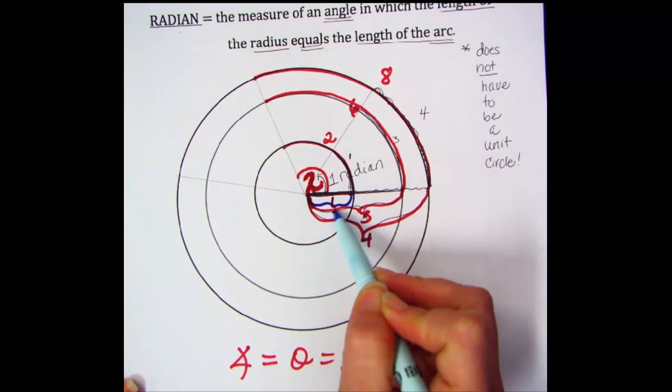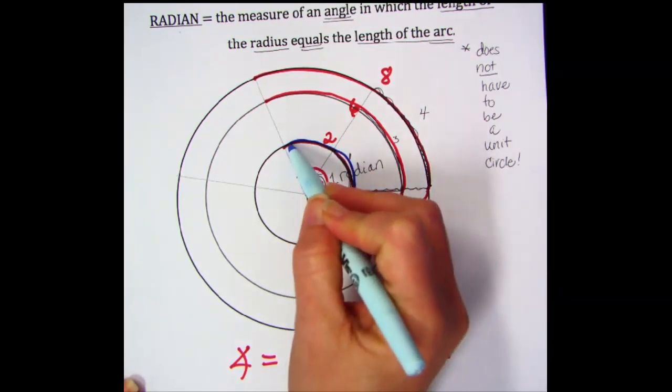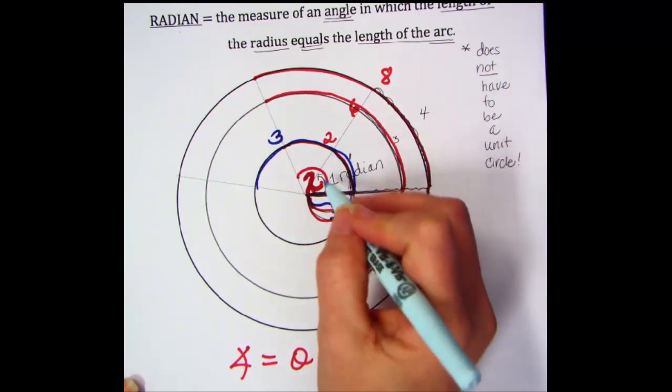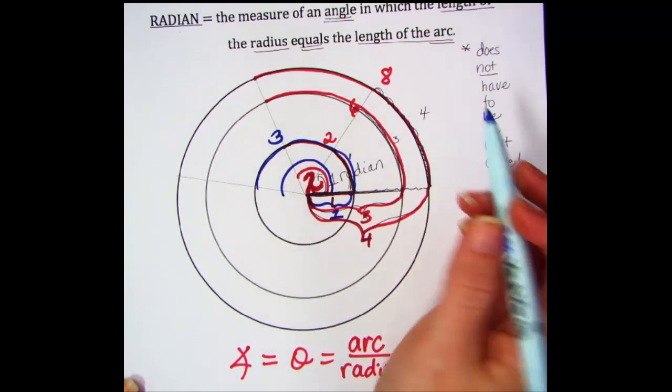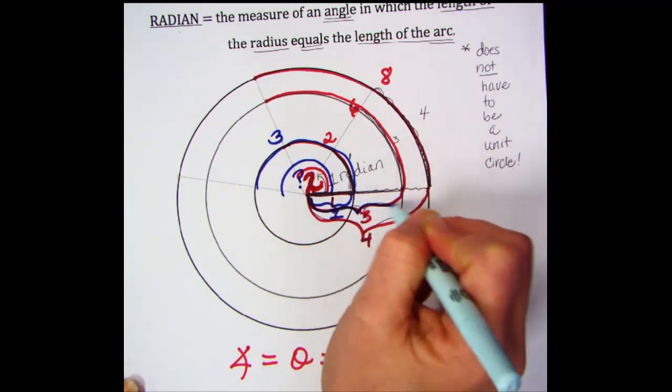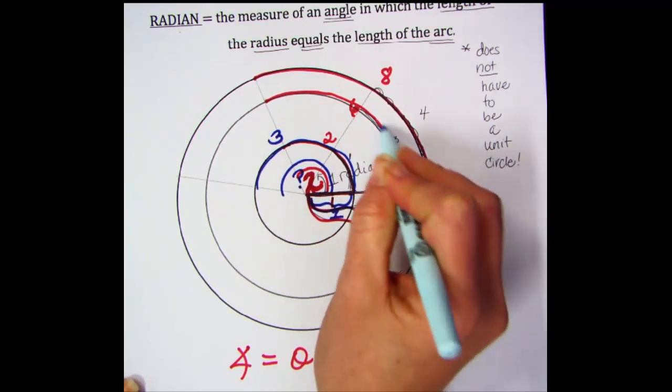Let me show you one more example where I have that same radius of one, but then I go three radiuses around, so the arc length is three. Or I have the radius length of three, and I go three radius lengths around, so the arc length is nine.